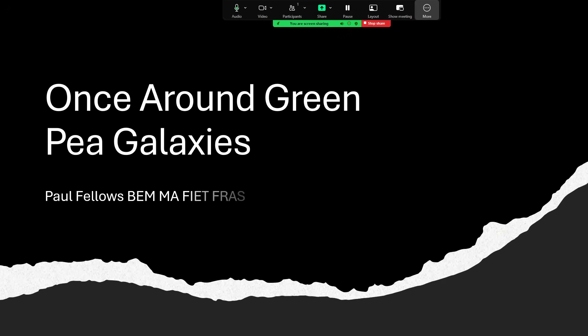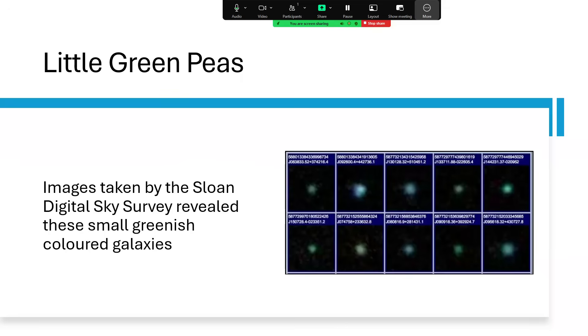Once around Green Pea galaxies. If you haven't yet watched the one about Little Red Dots, I recommend you go and watch that one first, but hopefully you'll enjoy both of them and it doesn't really matter which way around you go. Little Green Peas are images that were discovered in the Sloan Digital Sky Survey, small green blobs in the picture of all the galaxies that this was discovering across the sky.